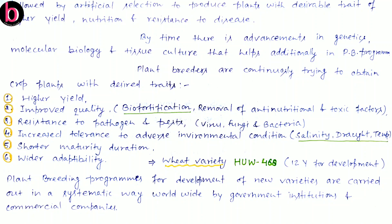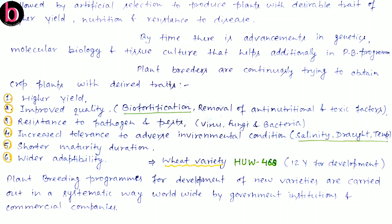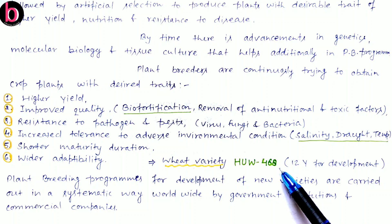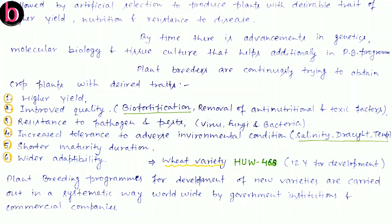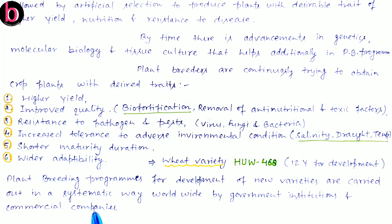We also have to create crops with wider adaptability. All the plant breeding processes we discussed are not easy to implement. For example, HUW 468, a wheat variety — for its development, 12 years were taken by plant breeders. So we can understand how complicated the process is. Plant breeding programs for the development of new varieties are carried out in a systematic way worldwide by government institutions as well as commercial companies.